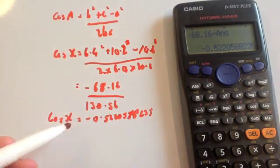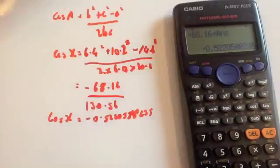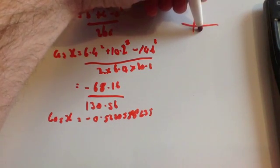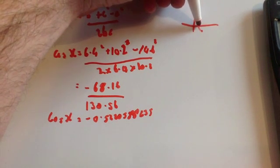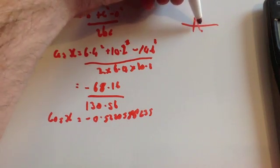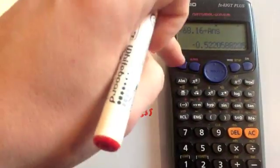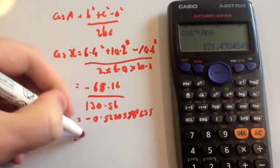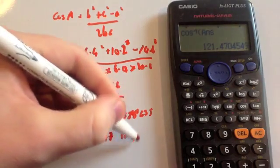This is negative because this is an obtuse angle. Looking at the cos graph, the cos graph starts at 1, goes down to 0 at 90 degrees, and then between 90 and 180 it's between 0 and -1, so it becomes negative there. Shift cos of the answer = 121.4722 degrees to 2 decimal places.